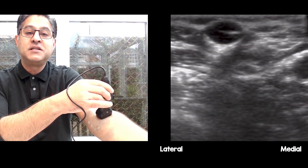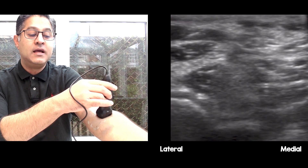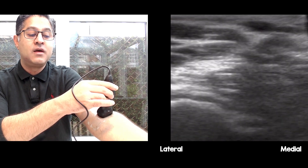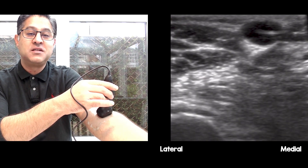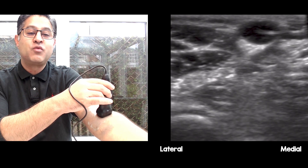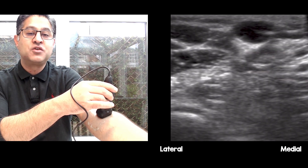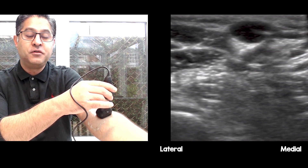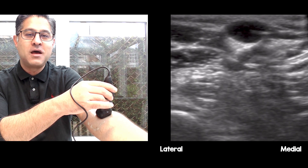Right underneath the cephalic vein, right in the center of the screen, that is the lateral antebrachial cutaneous nerve. So with one needle insertion you can block both the radial nerve and the lateral antebrachial cutaneous nerve — great for distal radius fractures where you don't want to give a full brachial plexus block. Hope that helps.